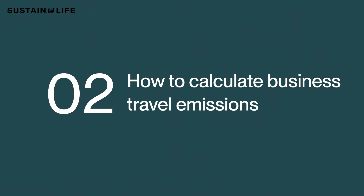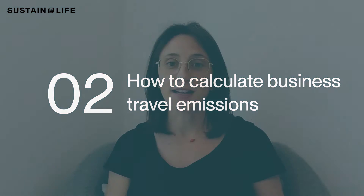So how do you calculate emissions from business travel? All you need to do is collect the miles that you've traveled on each mode of transit, like air, rail, car, or bus. You can typically get this information from your office manager or third-party travel agent. Enter the information into a tool like SustainLife for accurate emissions outputs.